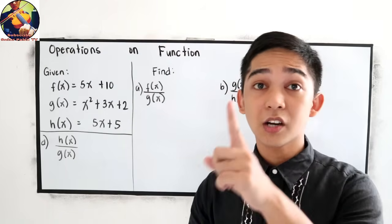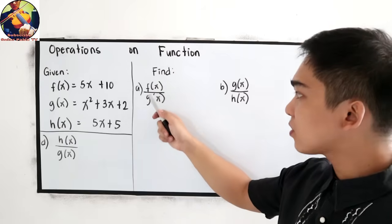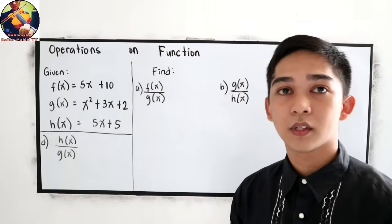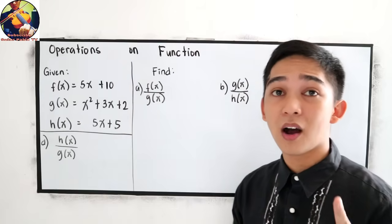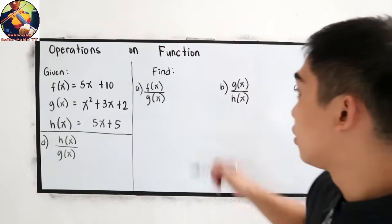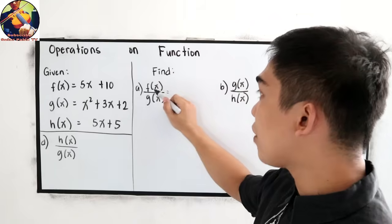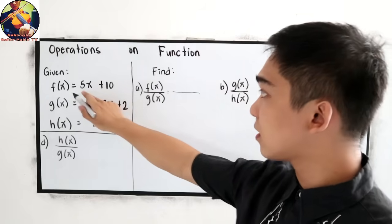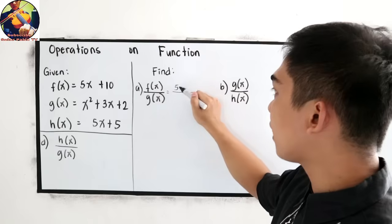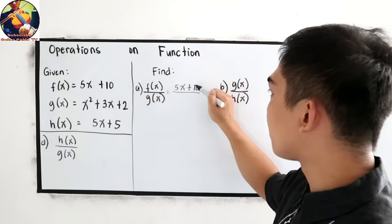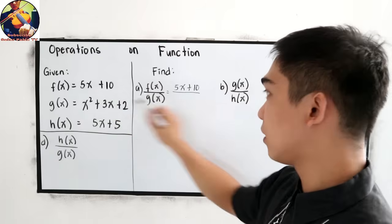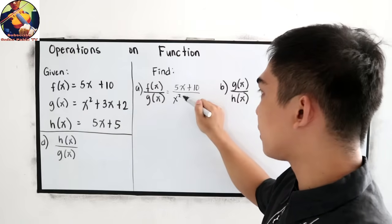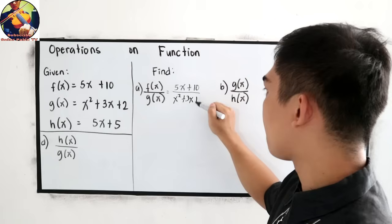So let's start with number 1, f of x over g of x. Our first step, substitute the value of the function. So f of x, that is 5x plus 10. Now g of x, copy x squared plus 3x plus 2.